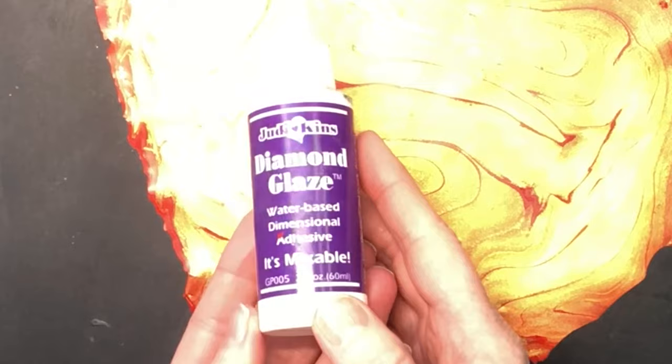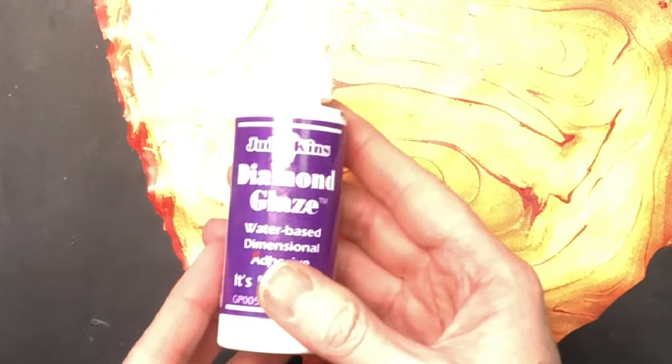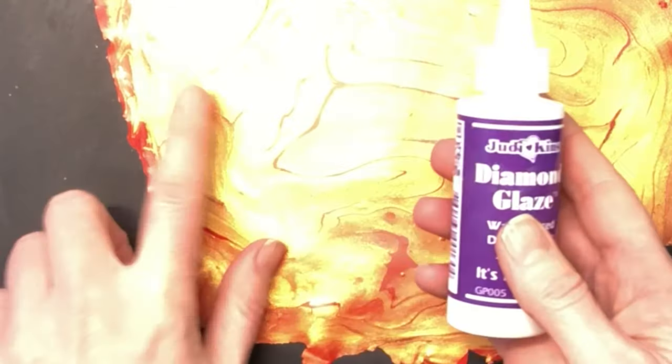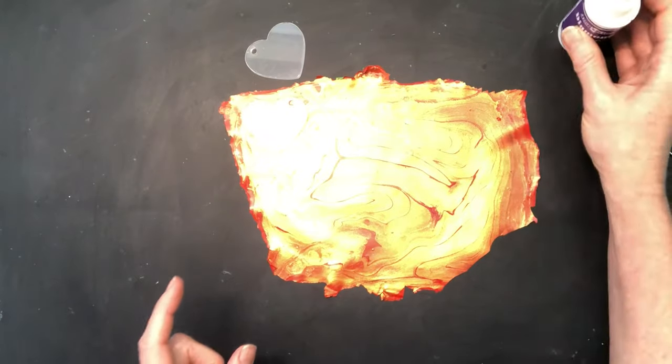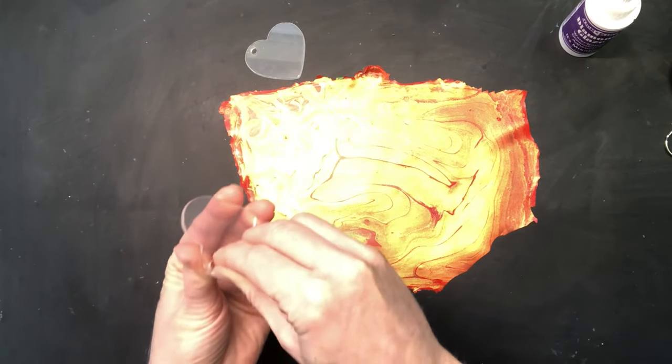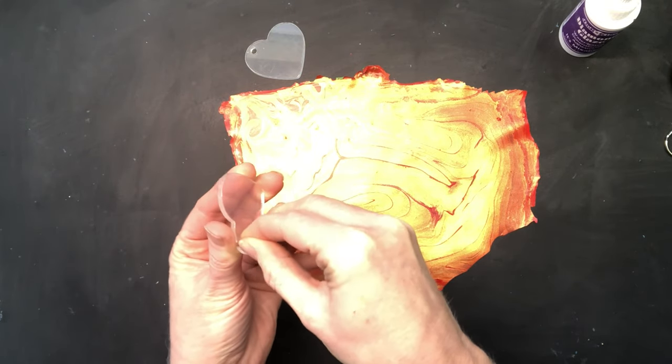In doing that you're going to need a few things. One thing you're going to need is diamond glaze water-based dimensional adhesive. You may have seen me use this before, so I'm going to use this to attach my skin and I'm going to need time to let that dry.